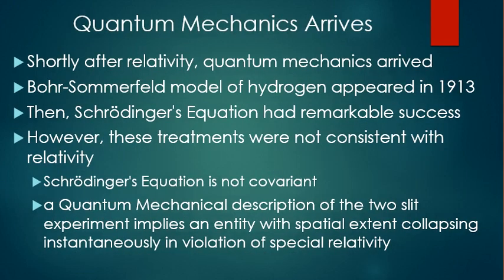Shortly after relativity, quantum mechanics arrived. The Bohr-Sommerfeld model of the hydrogen atom appeared in 1913. Then, a bit later, Schrödinger's equation had remarkable success. However, these treatments were not consistent with relativity. Schrödinger's equation is not covariant. And a quantum mechanical description of the two-slit experiment implies an entity with spatial extent collapsing instantaneously, in violation of special relativity.